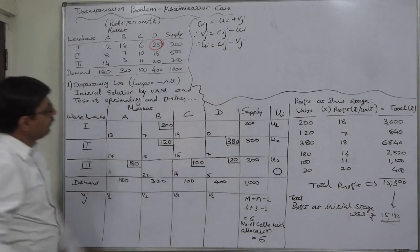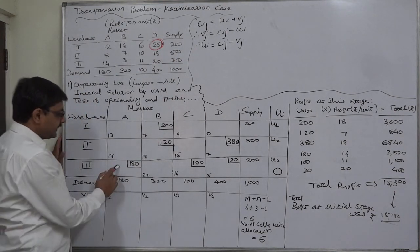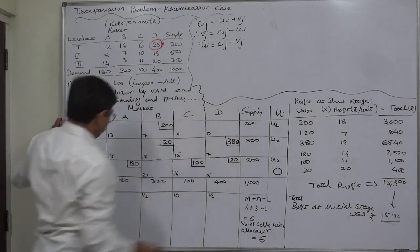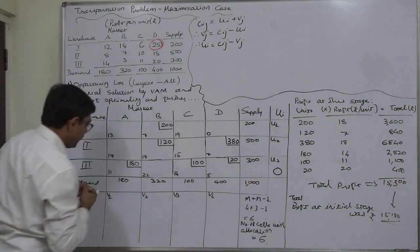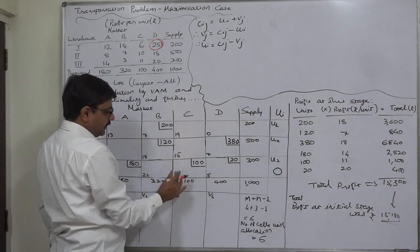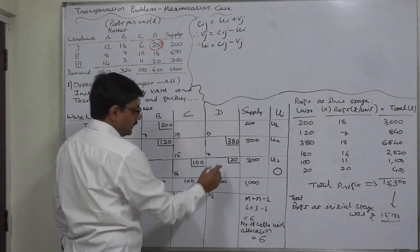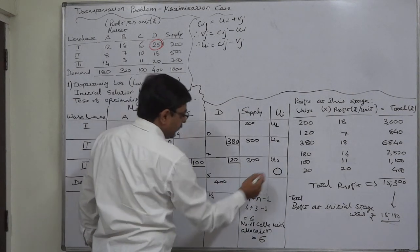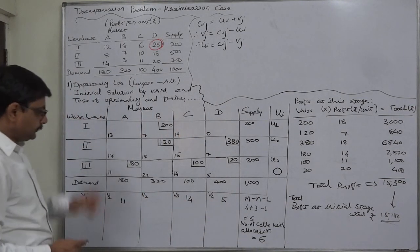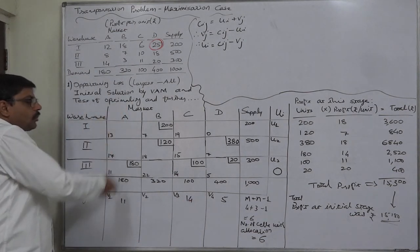We use the formula for occupied cells only. For the occupied cell in column A: v equals c minus u, so c11 minus u(0), giving v1 = 11. For column C: c14 minus u(0) gives v3 = 14. For column D: c5 minus u(0) gives v4 = 5. Now with these three v values and the occupied cells in the same columns, we can find the remaining u values, u1 and u2.